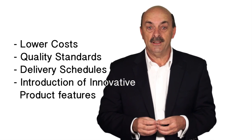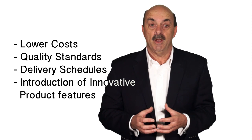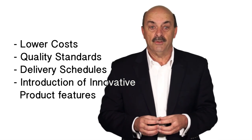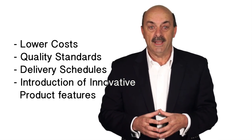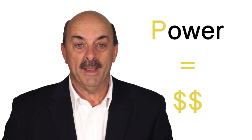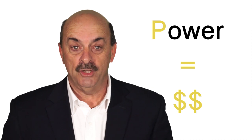If you do have a position of power, you can exercise pressure over organisations both upstream and downstream in the organisational value chain. Some of these pressures could include lower costs, quality standards, delivery schedules to minimise your stock level, and the introduction of innovative product features. We're searching for the power in the industry value chain — if you can achieve power, you will make money and you will save money.